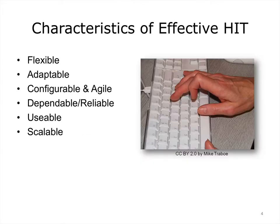The core characteristics of effective HIT systems are actually quite similar to the core characteristics of any technology — for example, the same characteristics one looks for when buying a new cell phone, camera, or computer. A flexible, adaptable, configurable, agile, dependable, and reliable EHR is essential in the health care industry, where regulations change and new software and technologies emerge daily. A rigid EHR that is difficult or impossible to modify will reach obsolescence very rapidly, and in safety-critical environments, dependability is non-negotiable.